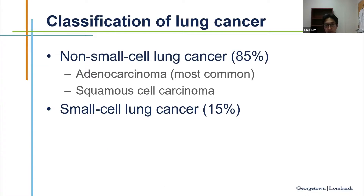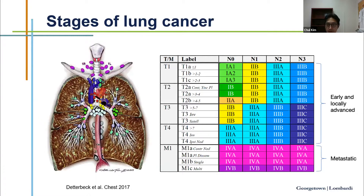85% of lung cancers are non-small cell lung cancer, with adenocarcinoma being the most common type — certainly the most common type seen in clinical practice, followed by squamous cell carcinoma. Small cell lung cancer consists of 15% of all lung cancer cases. We look at T, N, and M scoring or staging system. T pertains to the primary mass — its size and whether it involves surrounding organs. N is nodal staging — how many lymph nodes are involved and their locations.